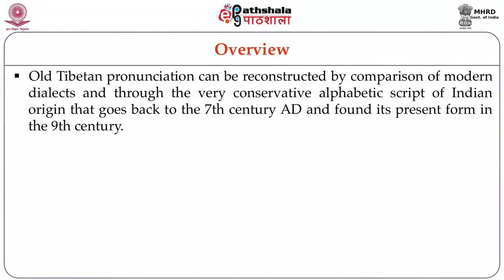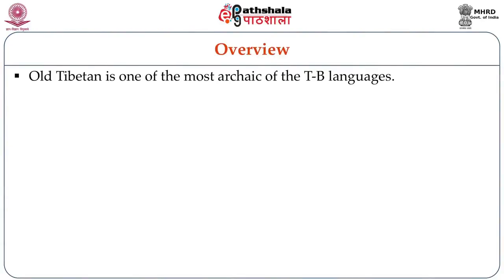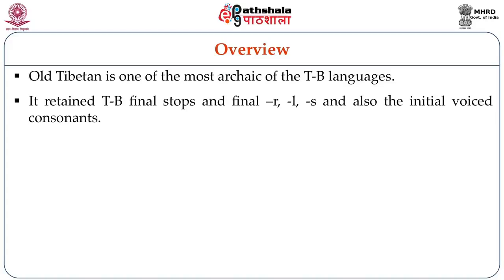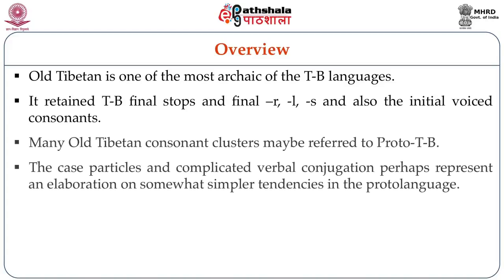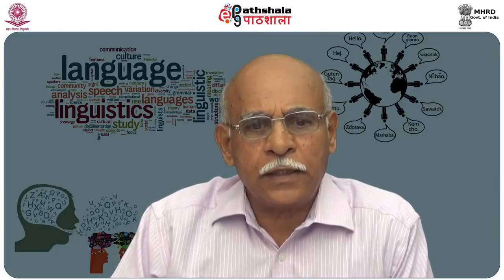Old Tibetan pronunciation can be reconstructed by comparison of modern dialects and through the very conservative alphabetic script of Indian origin that goes back to the 7th century AD and found its present form in the 9th century. The orthography is far more removed from present-day standard Tibetan pronunciation. Old Tibetan is one of the most archaic of the Tibeto-Burman languages. It retains Tibeto-Burman final stops and final r, l, s and also the initial voiced consonants. Many Old Tibetan consonant clusters may be referred to Proto-Tibetan; the case particles and complicated verbal conjugation perhaps represent an elaboration on somewhat simpler tendencies in the proto-language.